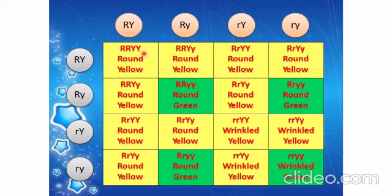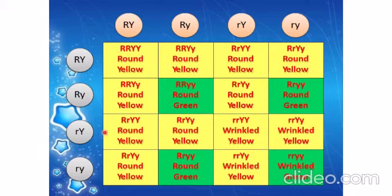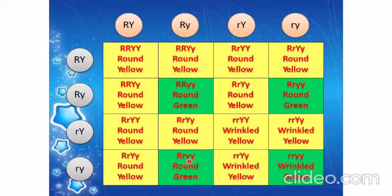Since capital is dominant, it shows its behavior even alone, so yellow appears. Where capital R and capital Y are both present: round and yellow. Where both small y are present: round and green. Where both small r are present but capital Y is there: wrinkled and yellow. And where small r and capital Y combine: wrinkled and yellow. Where small r and small y: wrinkled and green. So the four phenotypic characteristics obtained are: round and yellow, round and green, wrinkled and yellow, and wrinkled and green.